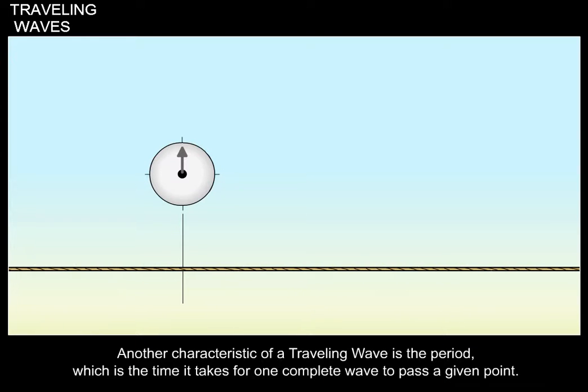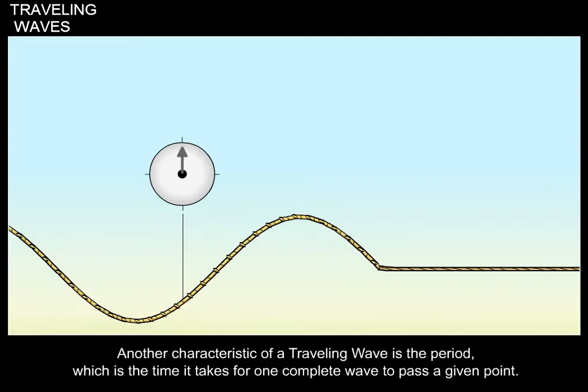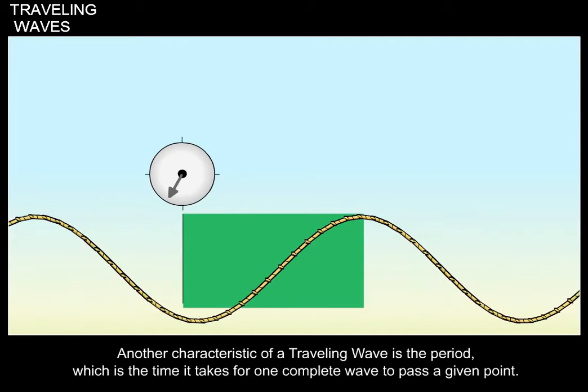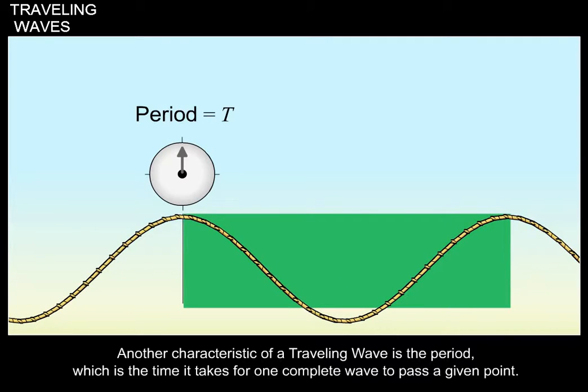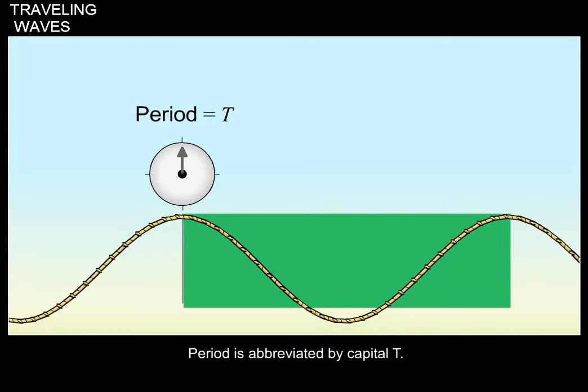Another characteristic of a traveling wave is the period, which is the time it takes for one complete wave to pass a given point. Period is abbreviated by capital T.